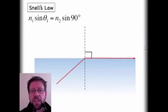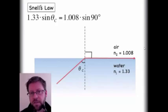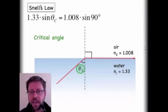I'm also going to get rid of my generic variables N1 and N2, and I'm going to put in the actual indices of refraction that I have for air and water. Notice that I've also changed my theta 1 to say theta C. The C is for critical, and we now call this thing the critical angle.